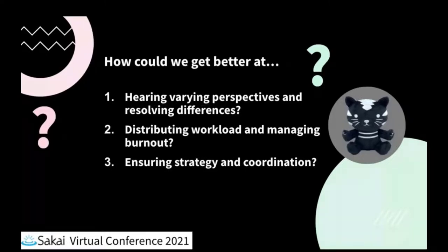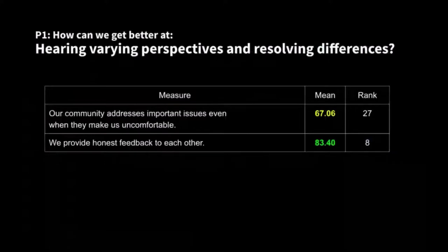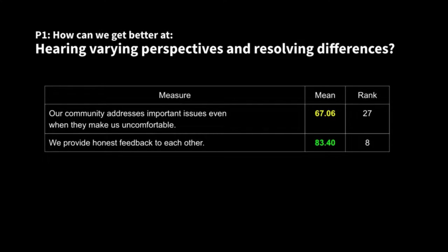Let me tease just a little more for the first question: how can we get better at hearing varying perspectives and resolving differences? One measure — we provide honest feedback to each other — had a mean of 83, the eighth highest of 31 measurement points. On the other hand, our community addresses important issues even when they make us uncomfortable scored a little bit less. So what does it mean that we provide honest feedback but are more challenged at addressing important issues? That's something a group can talk about in a breakout session.